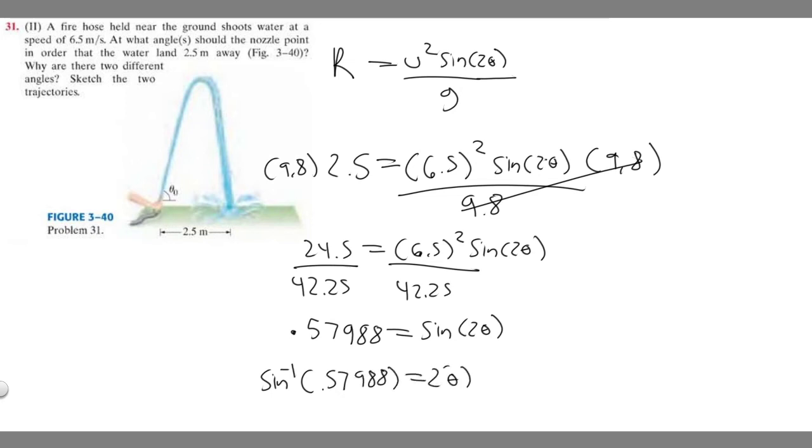And so if we want to solve for theta, we just divide both sides by 2. So theta is going to be equal to the arc sine of 0.57988 divided by 2.